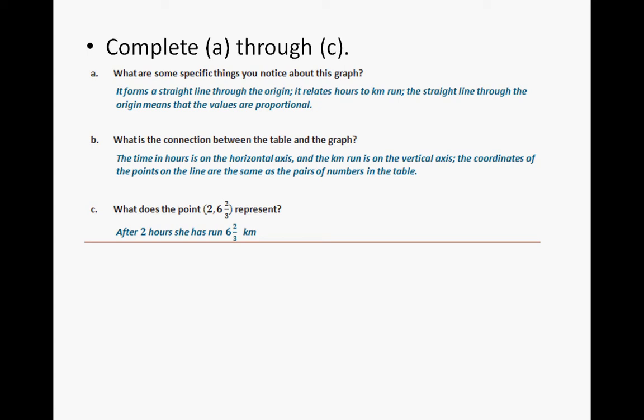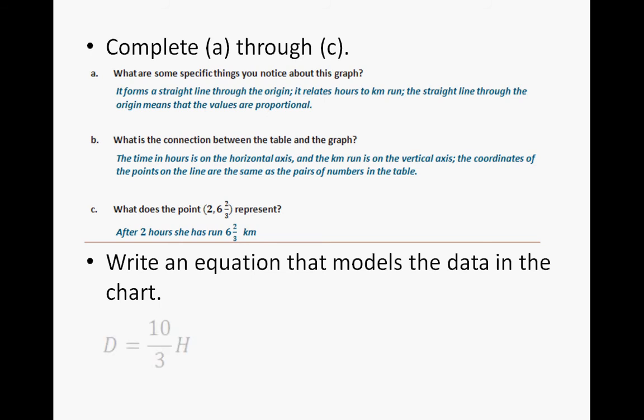And what does the ordered pair 2 and 6 and 2/3 represent? Well, after two hours, she has run 6 and 2/3 kilometers. 2 hours being the independent variable and 6 and 2/3 kilometers being the dependent variable. So write an equation that models the data in the chart. You could write it either y equals 10/3 h or if we designate d for distance and h for hours, it would be d equals 10/3 h.